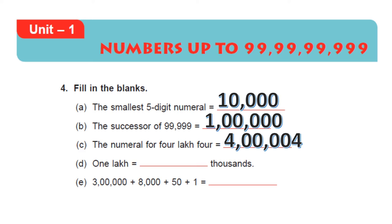1 lakh is how many thousands? First write 1 lakh. Thousands have 3 zeros. So strike out 3 zeros from 1 lakh. The remaining numbers are there — write that in the blank. I got 100. The correct answer is: 1 lakh is equal to 100 thousands.